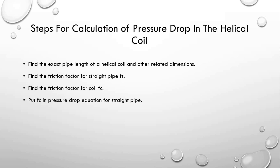Now we proceed to the steps to determine the pressure drop in the helical coil. Most engineering students already know how to determine pressure drop in a straight pipe. In the first step, we determine the exact length of the pipe used in the construction of the helical coil, along with related dimensions: inside diameter, outside diameter, mean diameter of the coil, and material of construction.